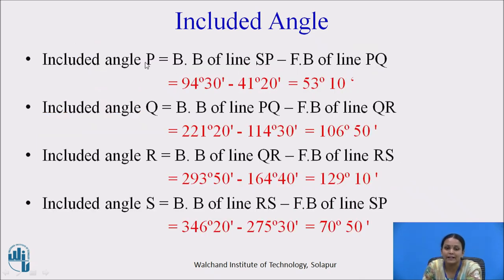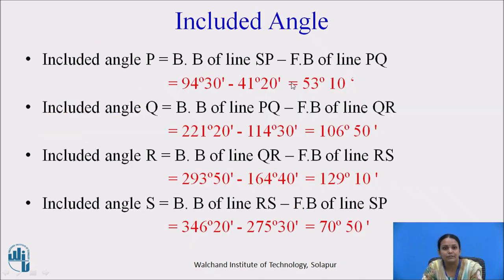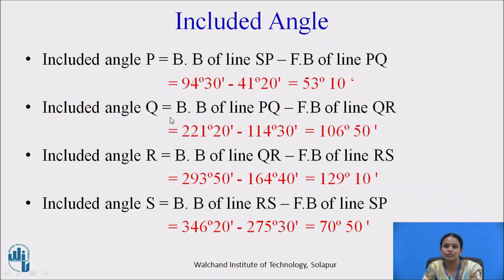To calculate included angle P, it is the difference of the backbearing of line SP and the forebearing of line PQ. The backbearing of line SP, from station P to S, is 94 degrees 30 minutes, and the forebearing of line PQ is 41 degrees 20 minutes. Their difference gives angle P. For angle Q, the backbearing of line PQ is 221 degrees 20 minutes and the forebearing of line QR is 114 degrees 30 minutes. Angle Q equals the backbearing of line PQ minus the forebearing of line QR. Similarly, calculate angles R and S.